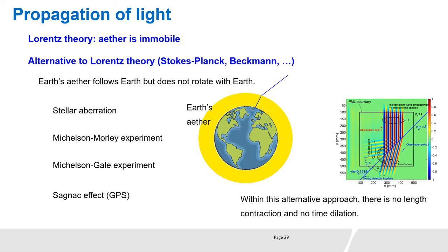In Lorentz theory for electromagnetism with moving bodies, the light medium, ether, is immobile. As an alternative to Lorentz theory, which I prefer, the Earth light medium follows Earth but does not rotate with Earth. This is in agreement with stellar aberration, Michelson-Morley experiment, Michelson-Gale experiment, and the Sagnac effect. Within this alternative approach, there is no length contraction and there is no time dilation.